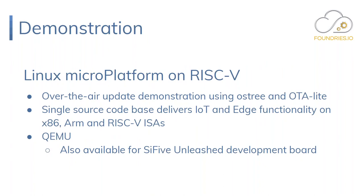I'm going to close with a quick demonstration. I'm going to show you the Linux Micro Platform running on a RISC-V emulator, and show you an over-the-air update of the operating system using industry standard software — OS-Tree, which is what you find in commercial enterprise distributions. It's a single source code base that delivers IoT and edge functionality on x86, ARM, and RISC-V. I can't show you Docker yet, but I'm going to do this on QEMU for ease. It's also available on SiFive Unleashed, and you can do exactly what I'm going to show at home on your PC.